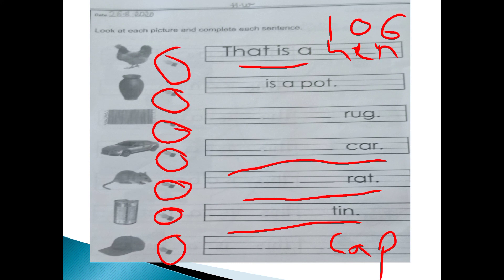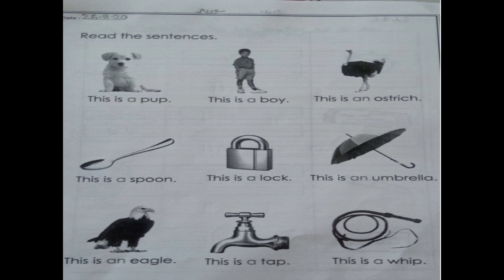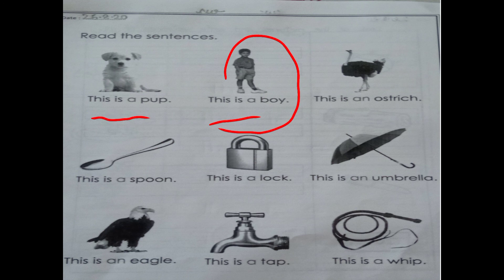So this is your homework for today. Now today we will read page number 107. T-H-I-S — 'this is a pup'. Now what is 'pup'? Baby of a dog is called a pup. 'This is a boy' — yeh ek ladka hai. 'This' means any one thing or one person that is near us.